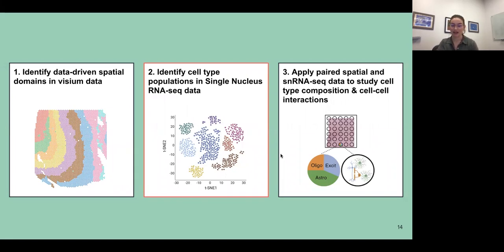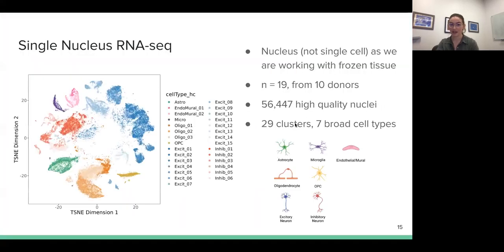Okay, so next, I'll move on to talking about our identification of cell type populations in our single nucleus RNA-seq data. So once again, we're working with single nucleus, not single cell, as we are limited to working with our frozen brain tissue. We had 19 samples from 10 donors and 56,000 high quality nuclei. From there, we pulled out an initial 29 clusters across seven broad cell types, including astrocytes, microglia, endothelial and mural cells, oligodendrocytes, OPCs, excitatory and inhibitory neurons. So we initially annotated our 29 clusters using a known set of marker genes and determined this breakdown of the data.